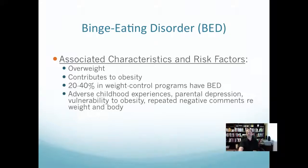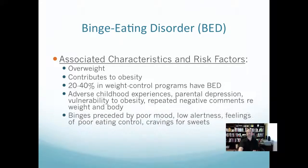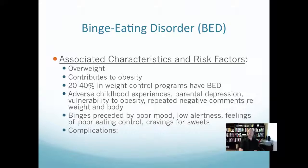Adverse childhood experiences contribute to BED. Families with strong parental depression and vulnerability have greater vulnerability to obesity. Individuals who have experienced repeated negative comments about their body and weight report higher levels of binge eating disorder. Typically, binges are preceded by poor mood, low alertness, feelings of poor eating control, or cravings for sweets. If we can stop the precursor, we can stop the binge — this is called Q stimulus response control. Complications include high blood pressure, high cholesterol, diabetes, and depression.